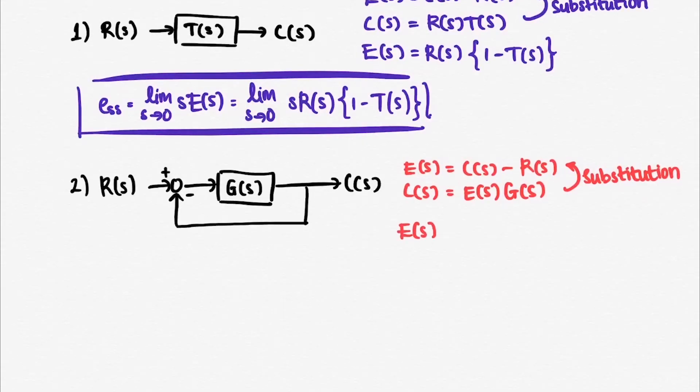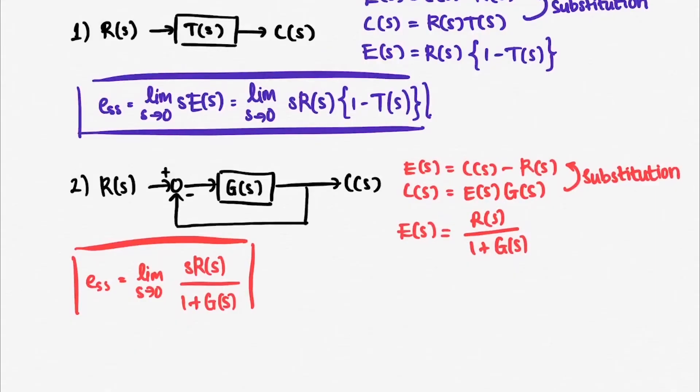Substituting it, we get e of s is equal to R of s over 1 plus G of s. Again, using final value theorem, we get the steady-state error to be limit towards 0 of s R of s over 1 plus G of s.